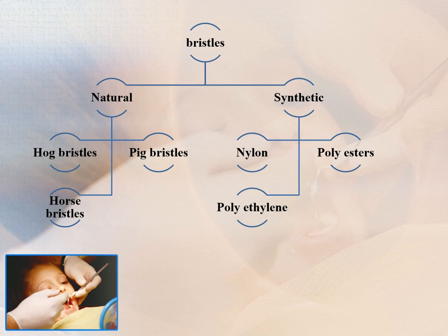Toothbrush bristles are grouped in tufts, usually arranged in 3 or 4 rows. Bristles are mainly of two types: natural or synthetic. Natural bristles are animal derivatives from hog, pig, or horses, whereas synthetic bristles consist of nylon, polyester, and polyethylene. Natural bristles fray, break, soften, and lose elasticity quickly, whereas nylon bristles last longer — which is why nylon bristle brushes vastly predominate in the market today.